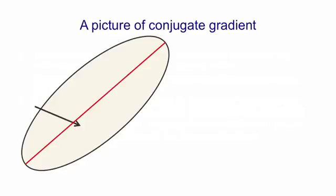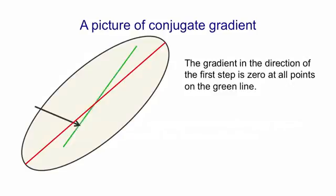So when we minimize in the first direction, we'll go slightly across the bottom of the ellipse and when we reach that point that's a minimum, there's an interesting property of all the points that lie on the green line. On that green line, the gradient in the direction of that black arrow is zero. So we can go anywhere along that green line and we won't destroy the fact that we're at a minimum in the direction of the black arrow.